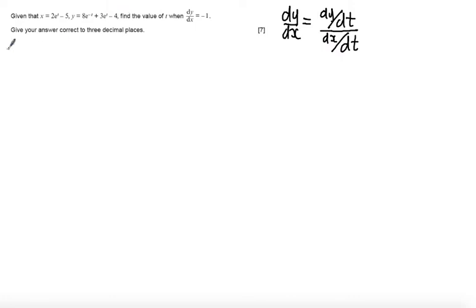So starting off finding dx by dt, differentiating this expression with respect to t. 2e to the t, e to the t differentiates to e to the t, so I just get left with 2e to the t. The minus 5 is a constant so it disappears.